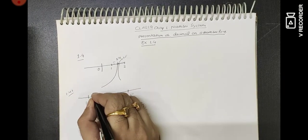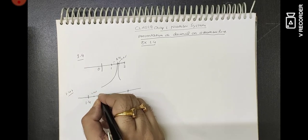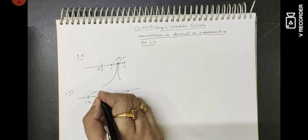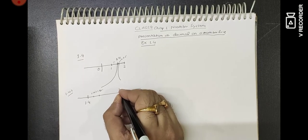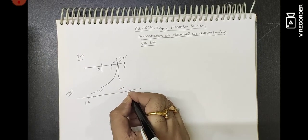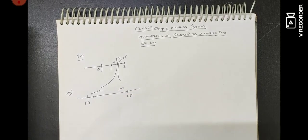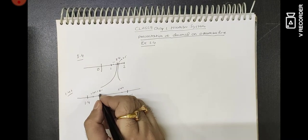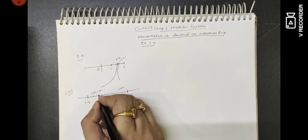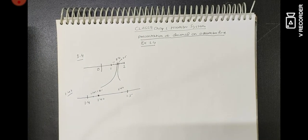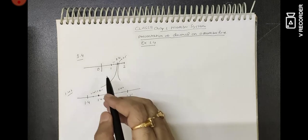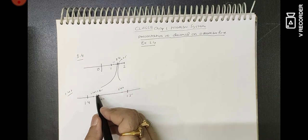So 1.41, 1.42 — 1.42 is at this point. In this way, you will show numbers to further decimal places. You show the first line, then you break further.